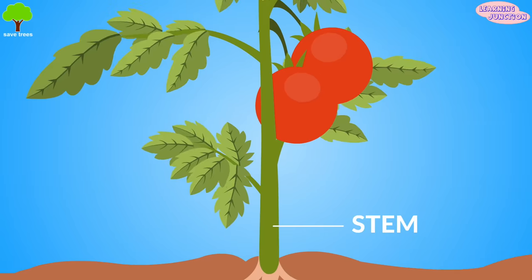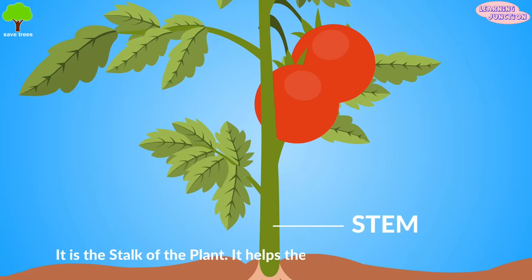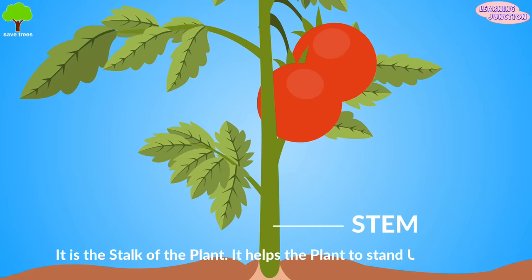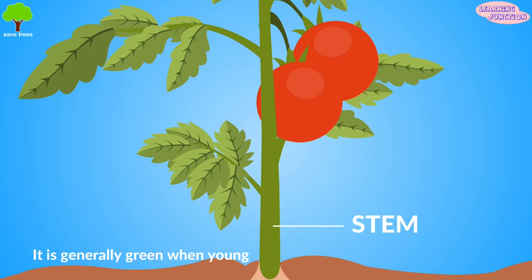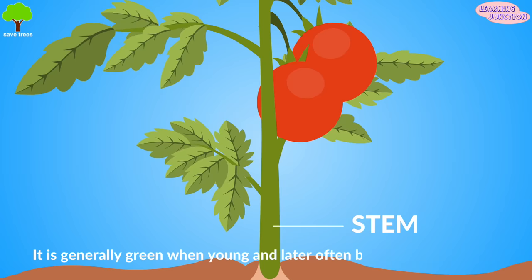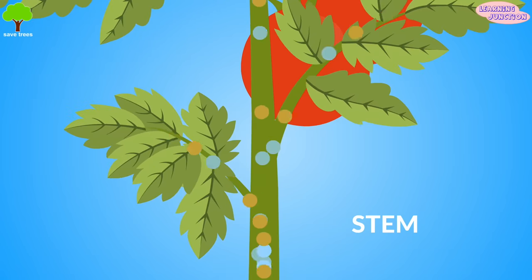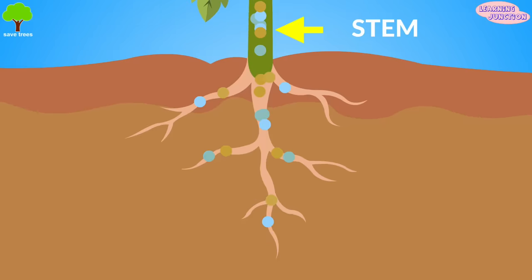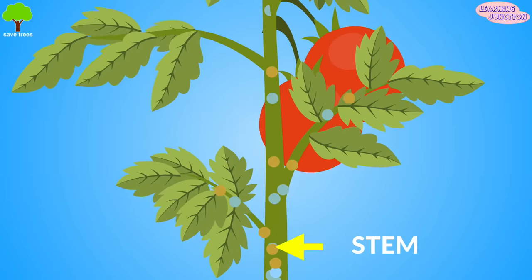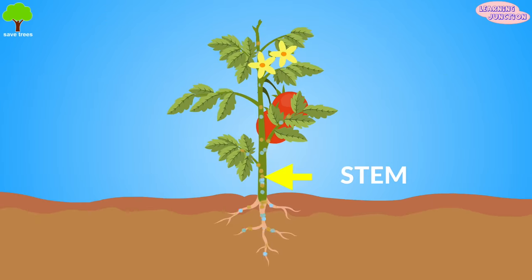The stem. It is the stalk of the plant. It helps the plant to stand upright. It is generally green when young, and later often becomes dark brown. The stem carries water and minerals from the roots to leaves, and carries food prepared by the leaves to the different parts of the plant.